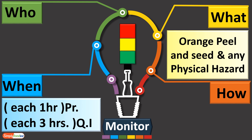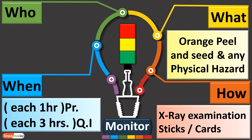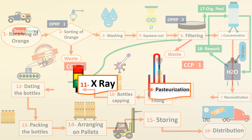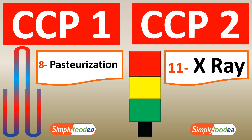When: each one hour by the production labor, or each three hours by the quality inspector. How I will monitor the X-ray: by examination sticks, examination cards, or calibration/verification cards of the X-ray. Who will monitor this CCP: the production labor each one hour, or the quality inspector each three hours.